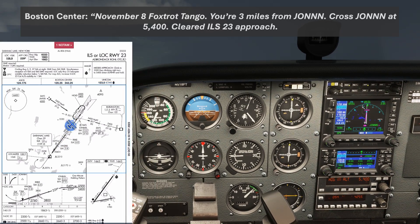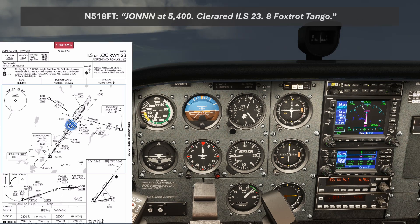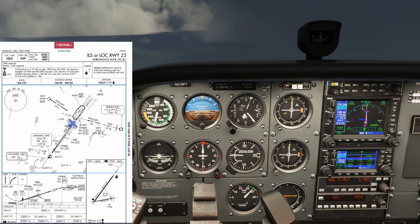ATC: 'November 8 Foxtrot Tango, you're 3 miles from JOHN, cross JOHN at 5,400, cleared ILS 23 approach.' We read back: 'JOHN at 5,400, cleared ILS 23, 8 Foxtrot Tango.'